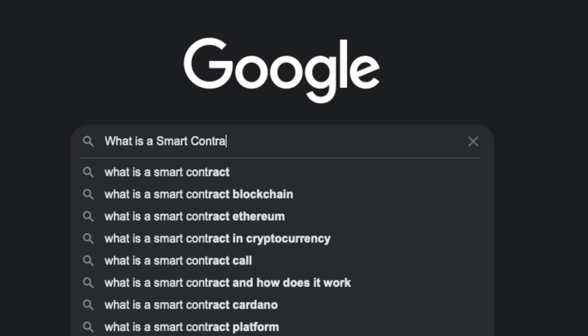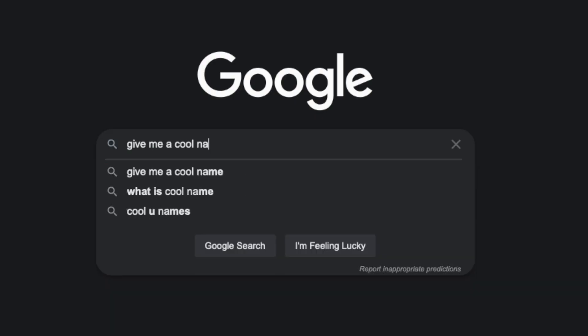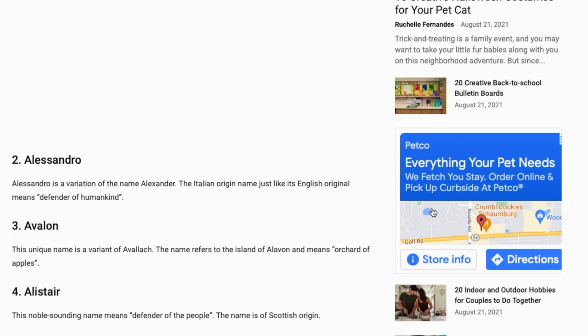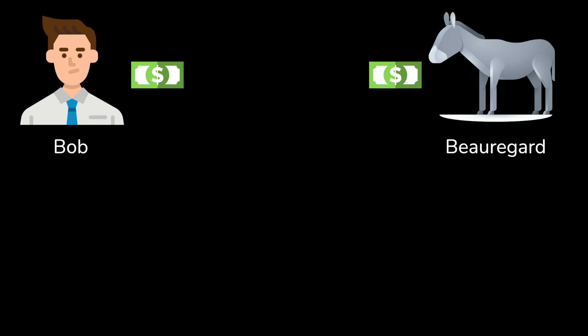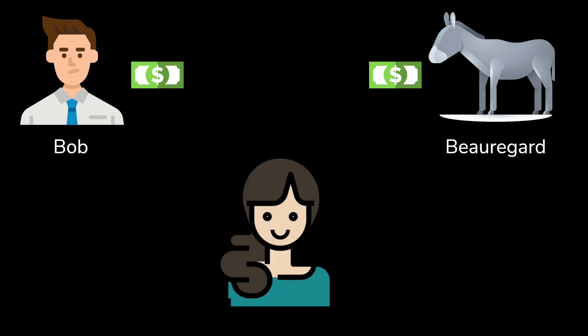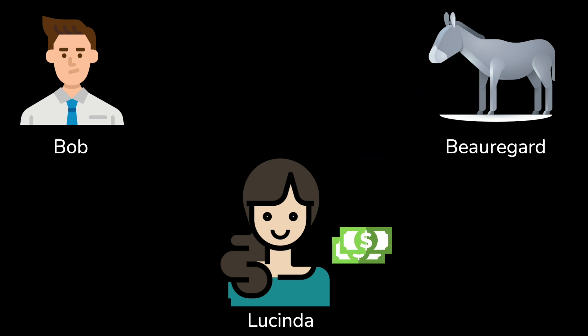What is a smart contract? Here's the simplest way I could figure out how to explain it. Let's pretend we have two friends: Bob and Beauregard. They want to make a bet on whether Tadas's YouTube channel is going to reach 100k by the end of 2021. Bob is bullish — he puts five dollars down that it'll happen. Beauregard puts five dollars down that it won't.